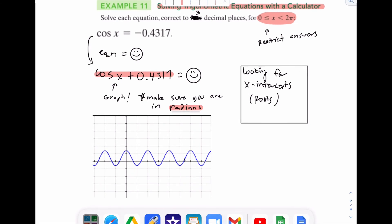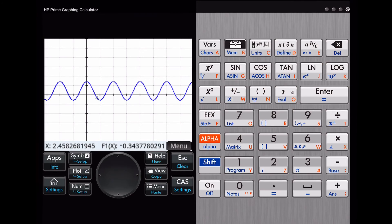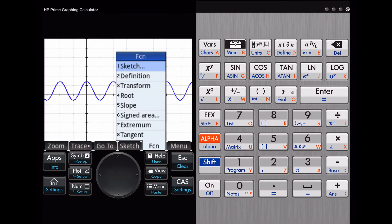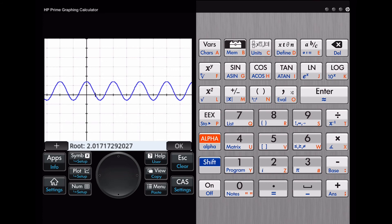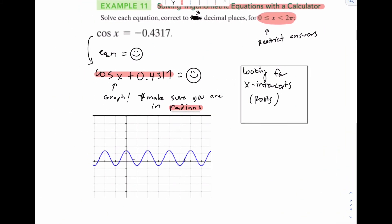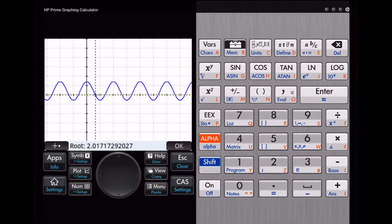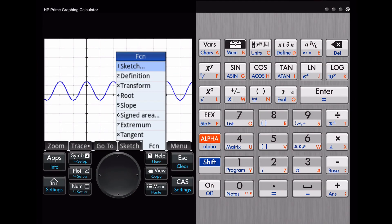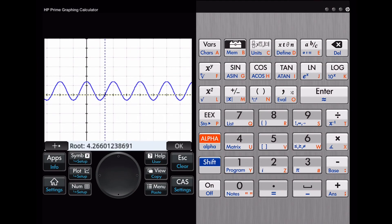So here's our calculator. Go to menu, function, root. Hit my plus sign to make it a little more clear. There's our first one, 2.017. So that one's going to be good. I'll circle it. x equals 2.017. The next one, tap there, function, root, 4.266.